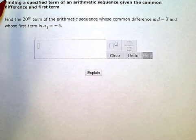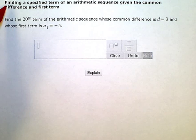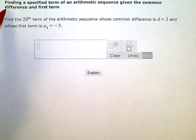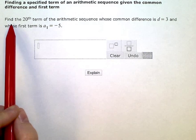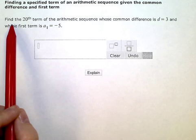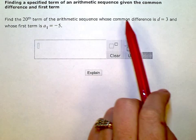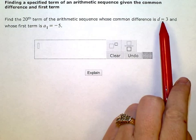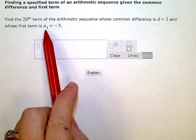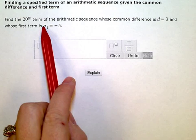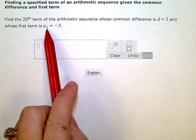Finding a specified term of an arithmetic sequence given the common difference and the first term. My problem here says: find the 20th term of an arithmetic sequence whose common difference is 3 and whose first term, or a sub 1, is negative 5.